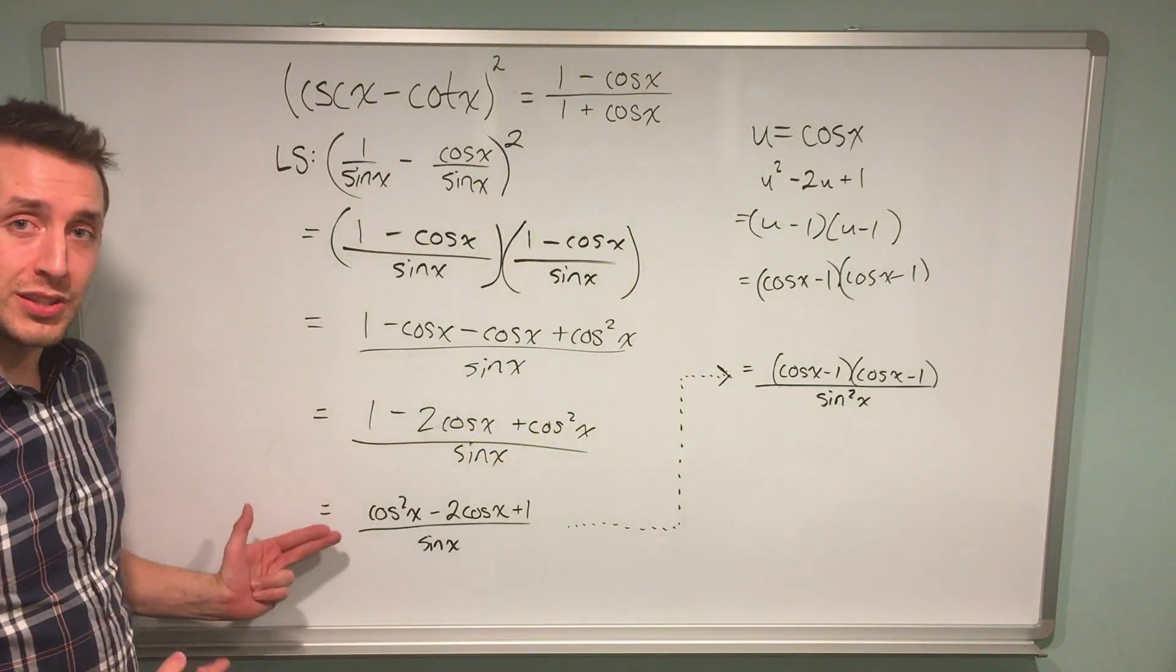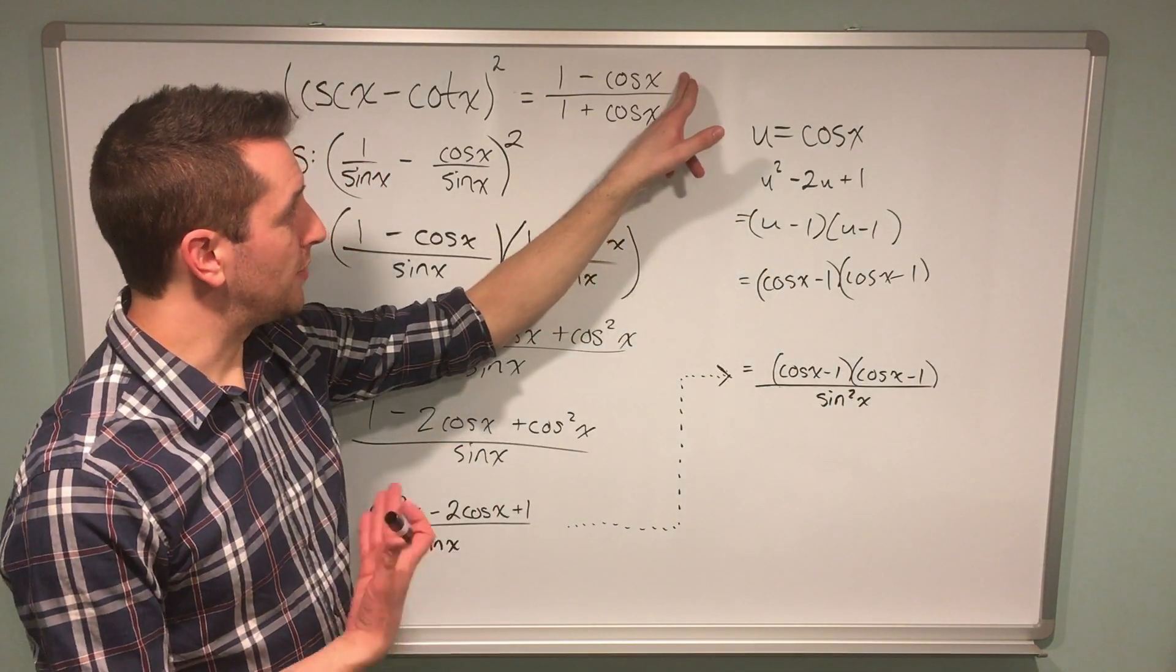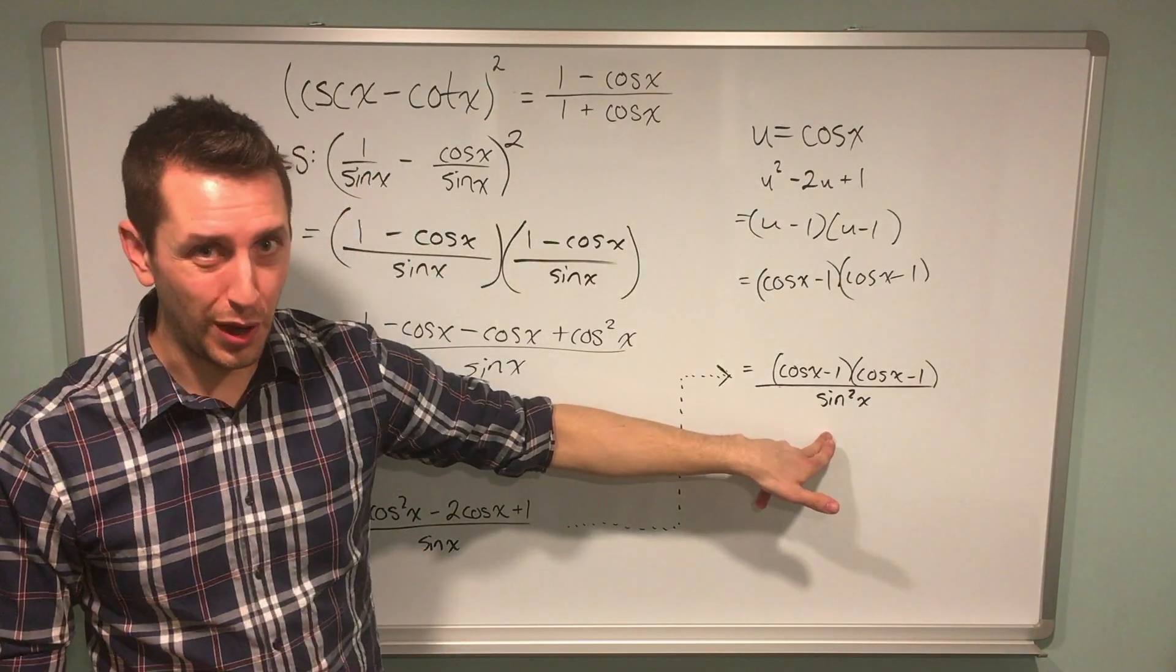So I may have gotten rid of this ugly quadratic, but I'm still not close to proving this trig identity. You can see on the right-hand side, I have cos on top and cos on the bottom. I definitely have cos on top, but I don't have cos on the bottom yet.